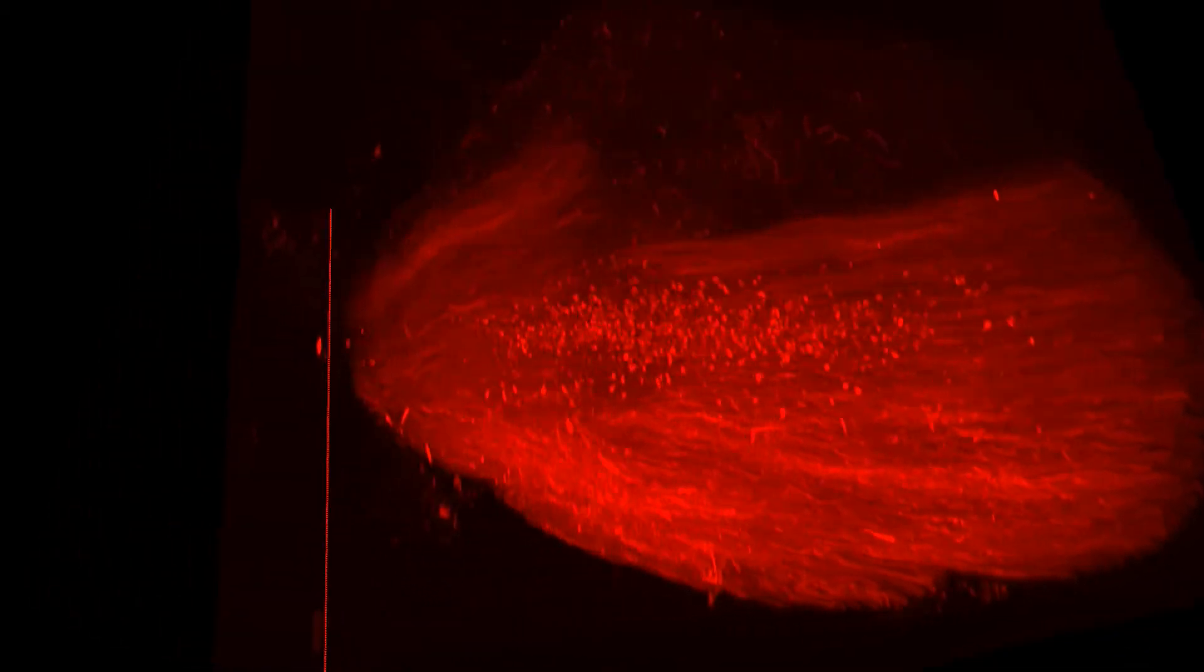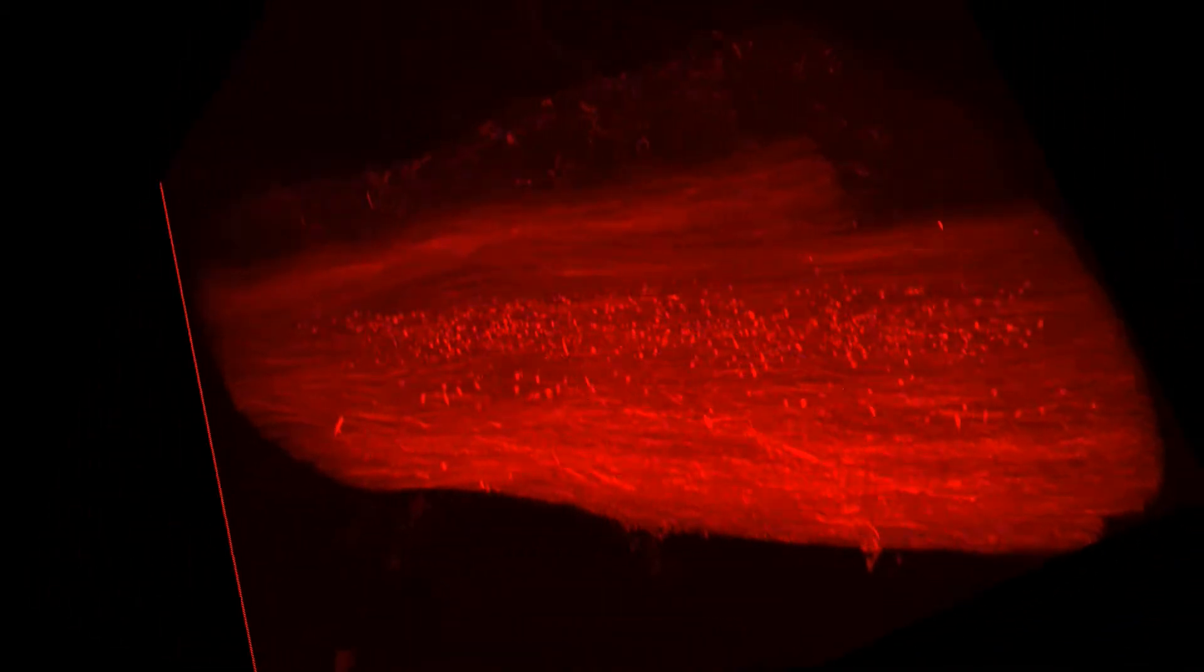V2A interneurons are a critically important cell type that helps to relay signals from our brain to the various muscles in our body that control motor function.